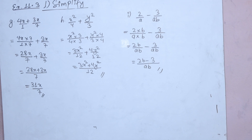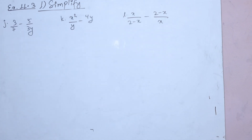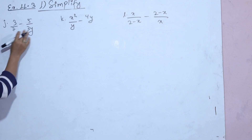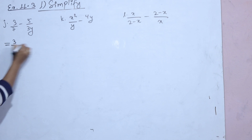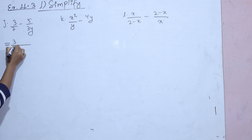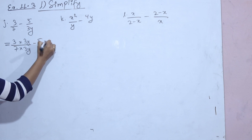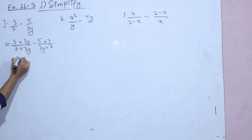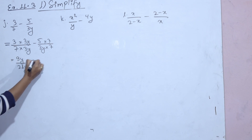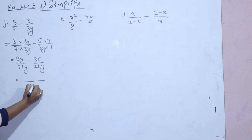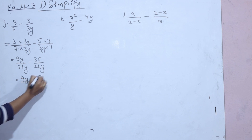Next sub-question: 3 by 7y minus 5 by 3y. The denominators are different, so find the LCM of 7y and 3y. Multiply: 3 by 3 gives 9y by 21y, and 5 by 7 gives 35 by 21y. The denominator is the same — 21y — giving 9y minus 35 by 21y.